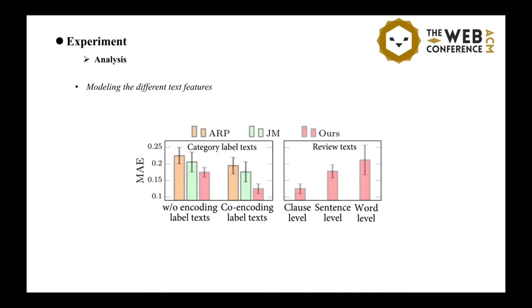So, from the result, we see that co-encoding category features can lead to fewer prediction errors. Also, we find that word-level graph performance were the worst. This is because of the sparsity of the node model.